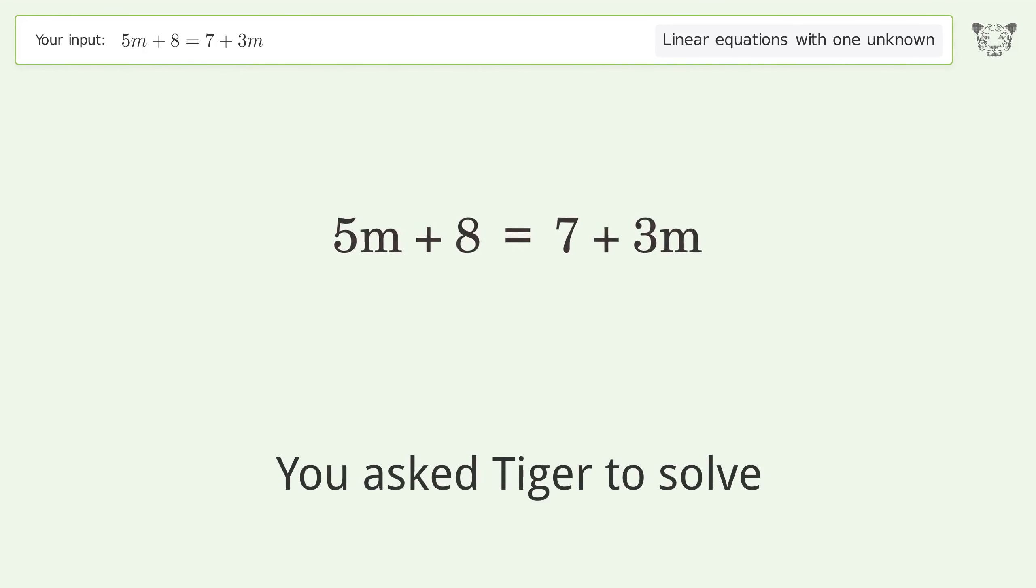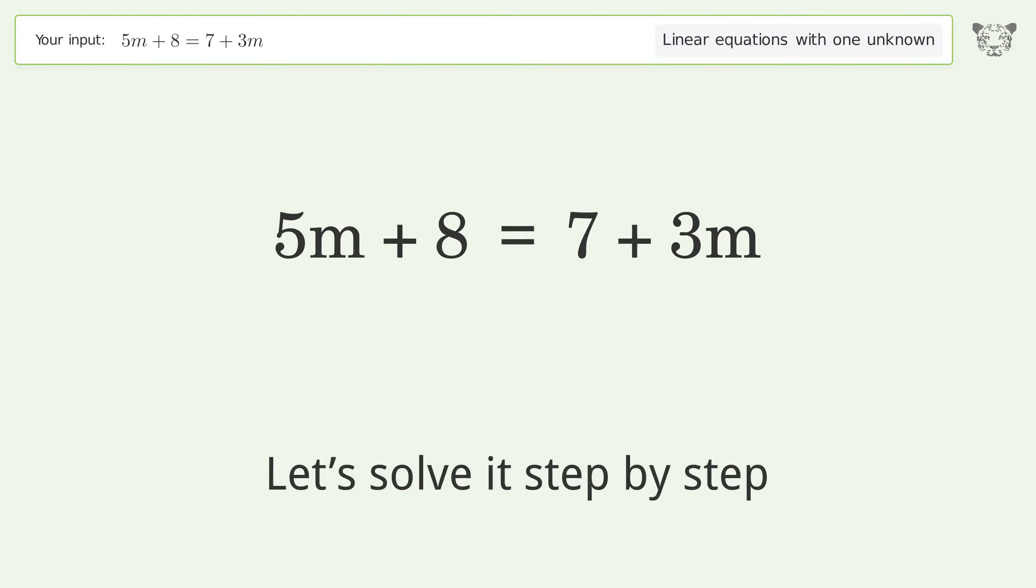You asked Tiger to solve. This deals with linear equations with one unknown. The final result is m equals negative 1 over 2. Let's solve it step by step.